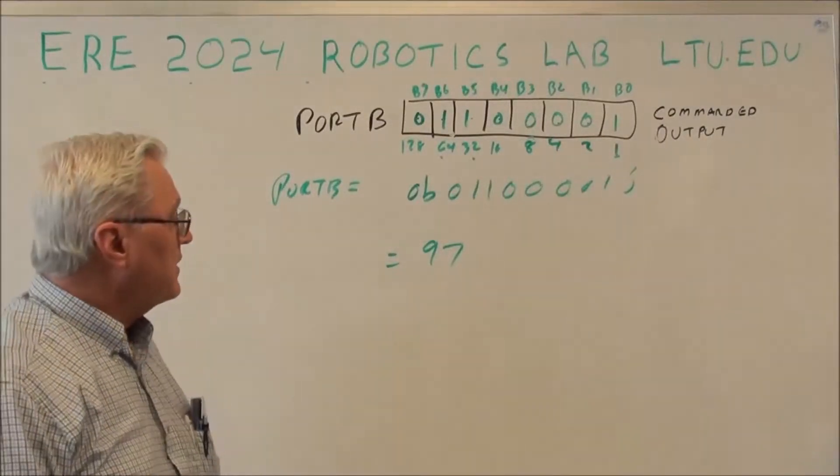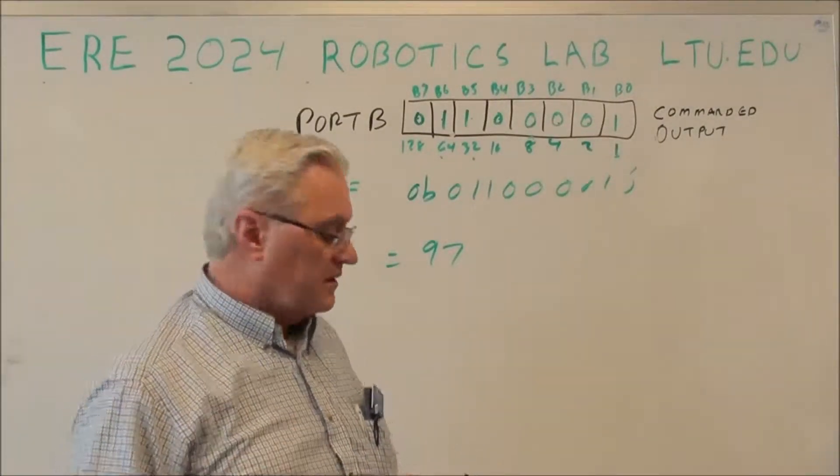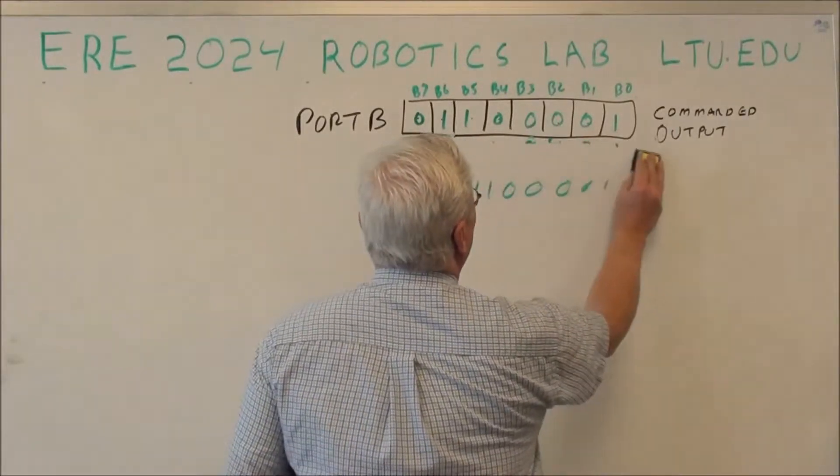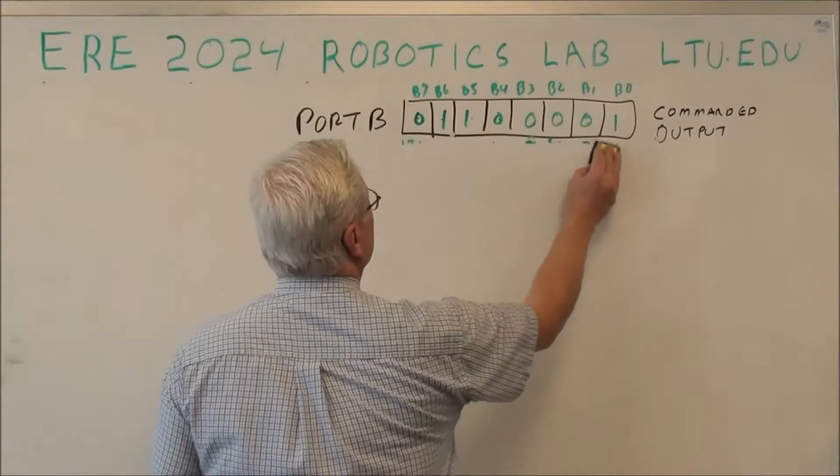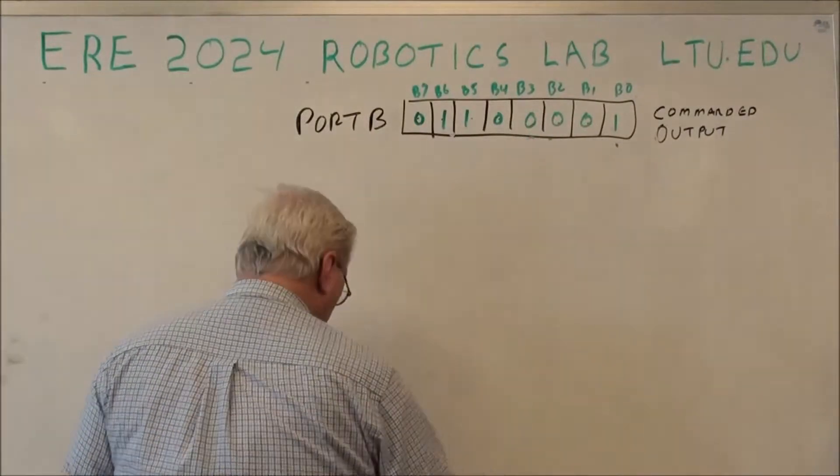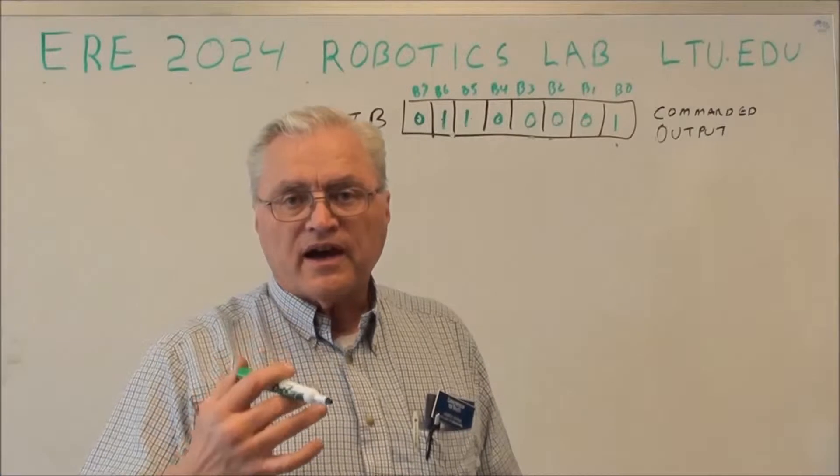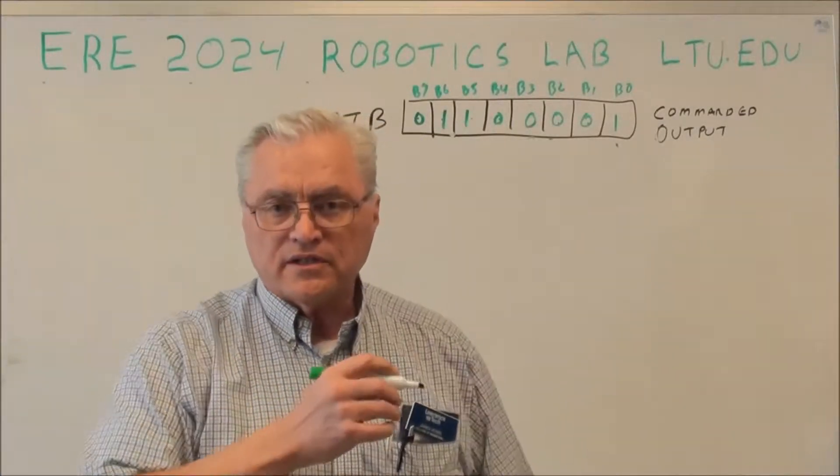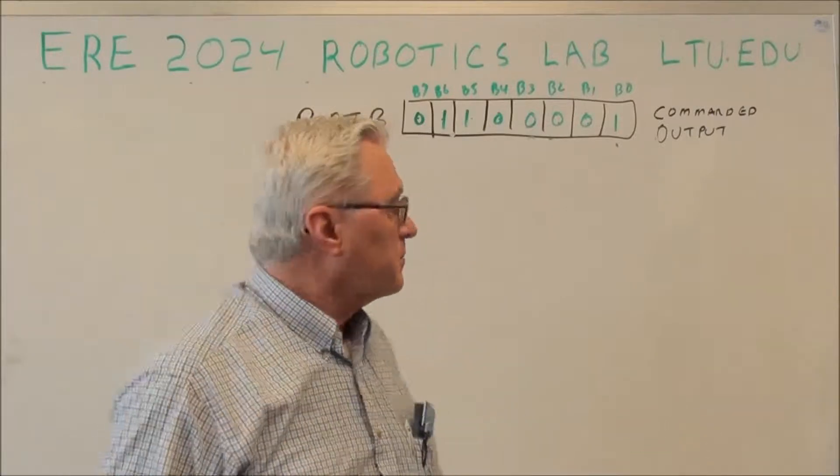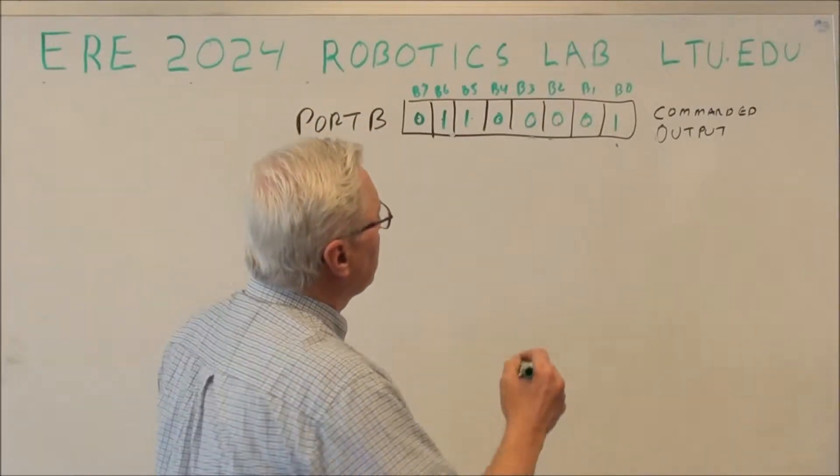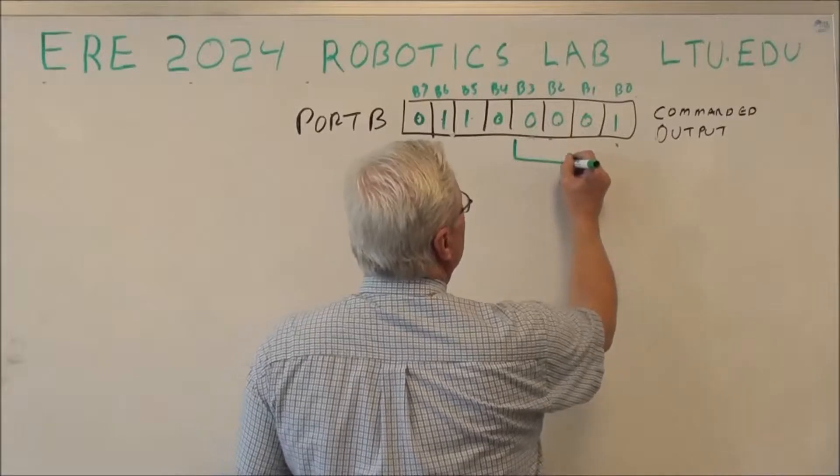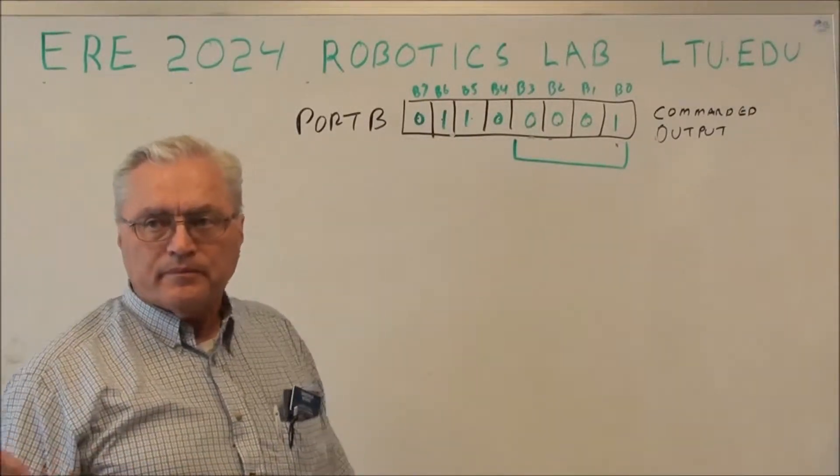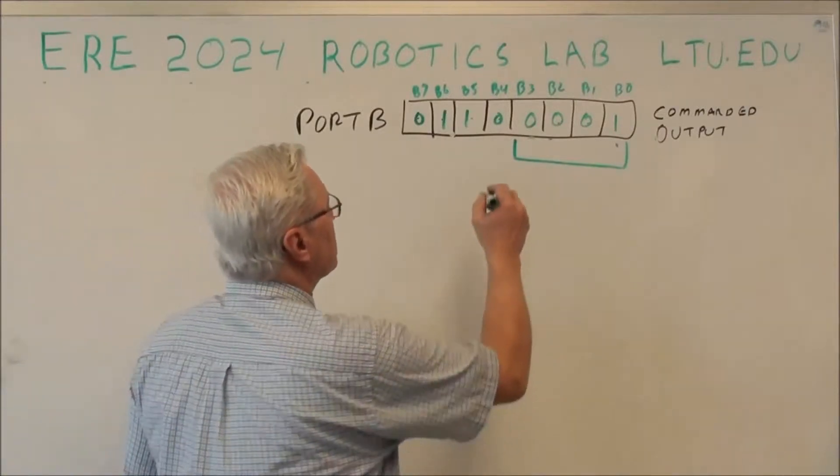Or we could treat it as a hexadecimal number. The way hexadecimal works is it's the numbers from zero through nine and then A, B, C, D, E, F, so you get zero through 15 essentially in one base. And it works out that the numbers from zero to F match up with four bits, a four-bit nibble.